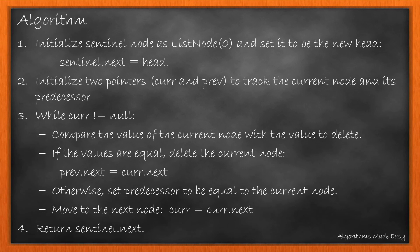If the values were equal, we deleted the current node. Otherwise, we set the previous to be equal to the current node. Then we move to the next node. At the end, we return the next of sentinel. This becomes our algorithm.